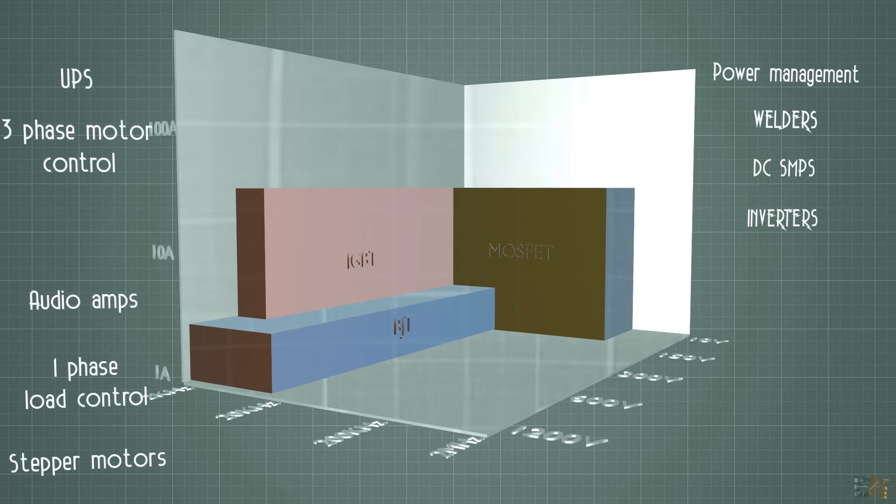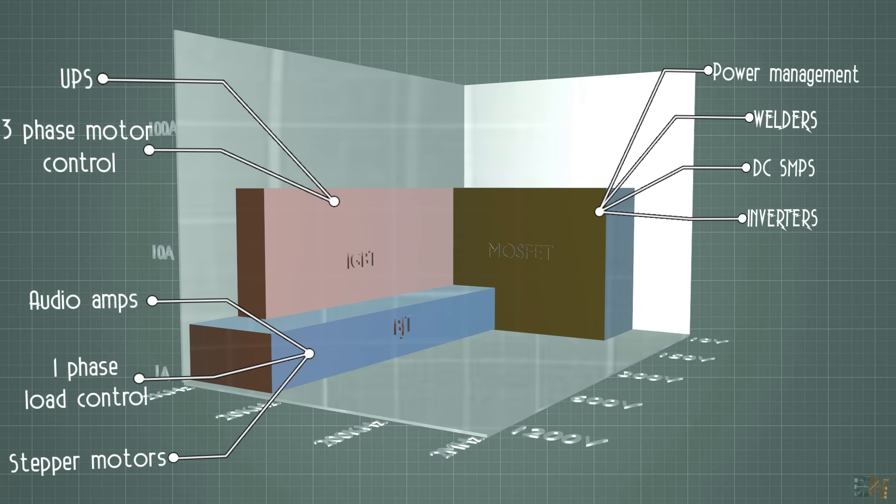IGBTs could withstand good voltage and current values. These are some examples on which application could each of these components be used as power control device.